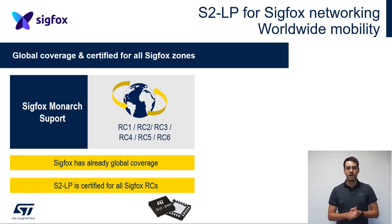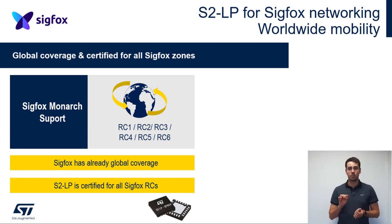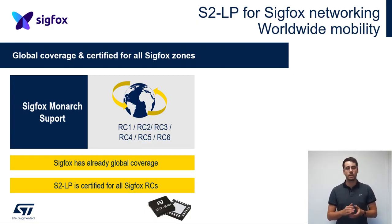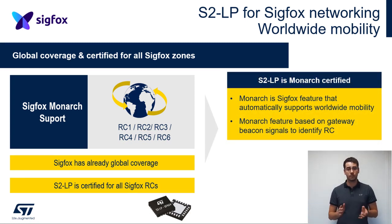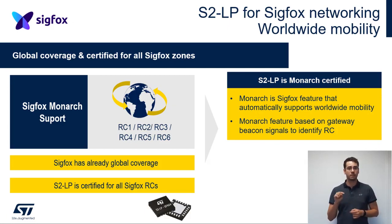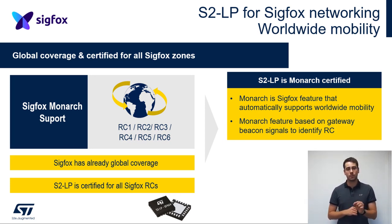As you may know, Sigfox is divided into different RC zones to match local radio regulations. For instance, to communicate in Europe you will need to match the RC1 radio regulation, and to communicate in the United States you will need RC2. S2LP is Sigfox certified for all RC zones and is also certified for the Monarch Feature. Monarch Feature is a Sigfox service that lets the device automatically support worldwide mobility, based on gateway beacon signals to identify RC zones, so a Monarch device will adapt itself to the right radio regulation zone.